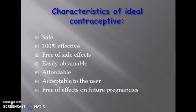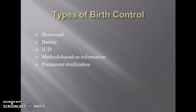It means the contraceptive must not prevent the individual from being able to conceive when needed later. Now let's look at the types of birth control: we have hormonal methods, we have barrier methods, we have IUCD — that is the intrauterine device — then we have methods based on information, and then we have permanent sterilization.